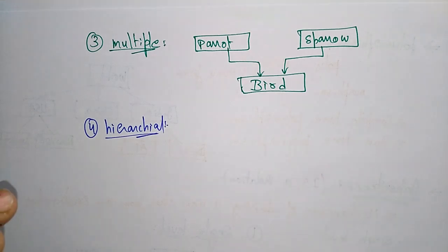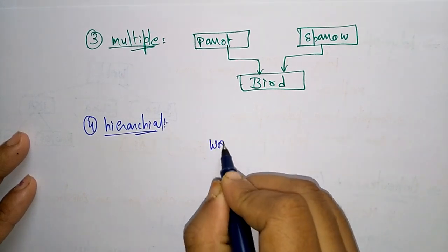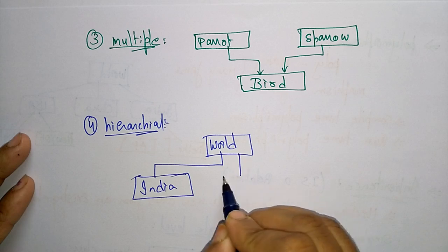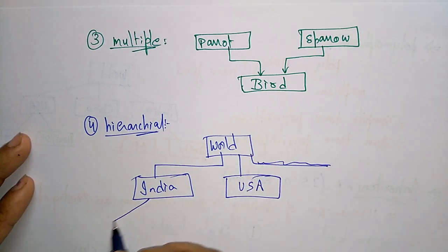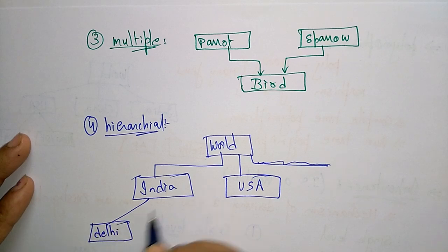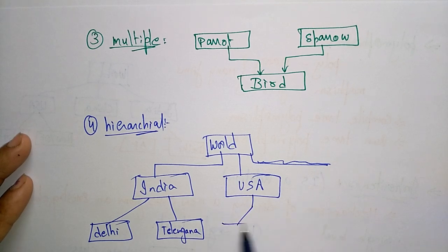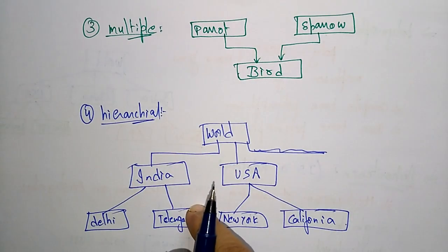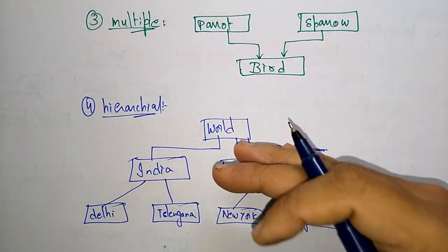Next is hierarchical inheritance. For example, take the world — from the world you have different countries like India and USA. In India you have Delhi and Telangana, and in USA you have New York and California. You have a parent class and multiple child classes. This is the representation of hierarchical inheritance.